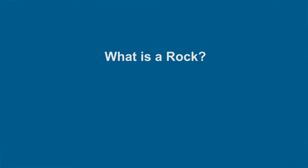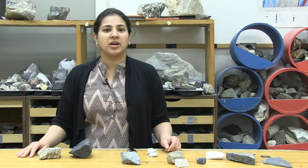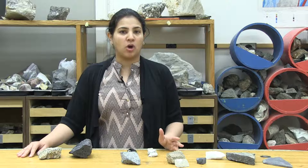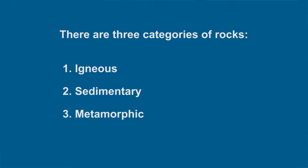What is a rock? A rock is a coherent, naturally occurring solid which consists of an aggregate of one or more minerals. There are three major categories of rocks, namely igneous, sedimentary, and metamorphic.